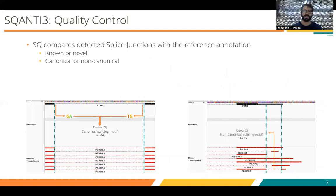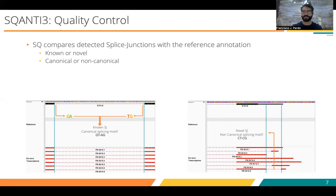SQANTI also looks at the splice junction level. By doing that, we can say if a certain splice junction is known or novel — if it was previously annotated in the reference — but also, looking at the genomic sequence, we can say if that splice junction presents a canonical or non-canonical splicing motif. Here we have two examples: the first is a perfect splice junction that perfectly matches something already annotated and presents a canonical splicing motif. In the second example, we have a normal splice junction with a non-canonical splicing motif, which is kind of suspicious.